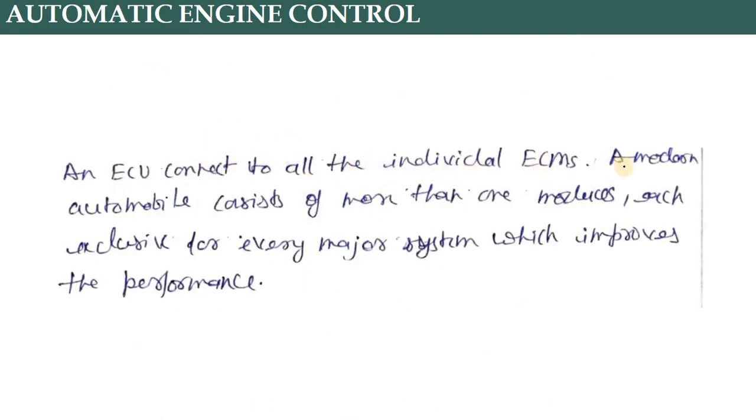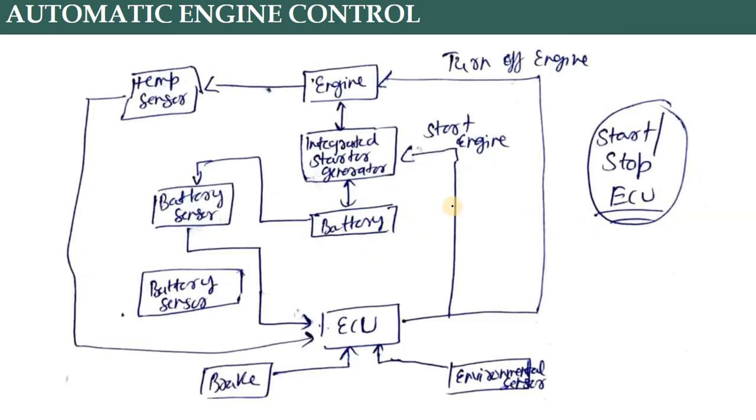A modern automobile consists of more than one ECU module, each exclusive for a major system which improves performance. So there can be different modules and a central unit connected. Here we see a block diagram.